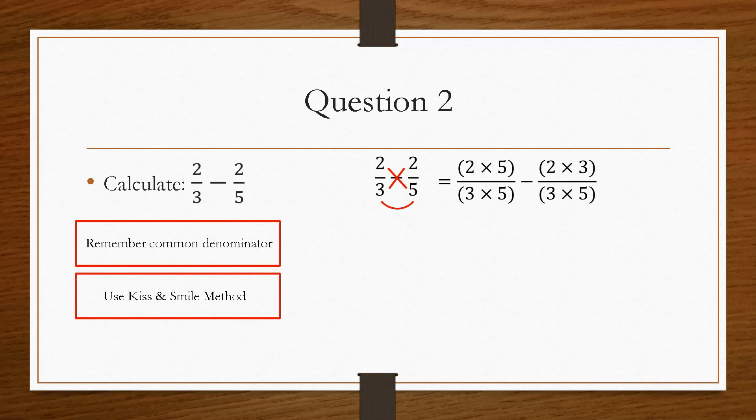So we get the intermediate calculations, 2 times 5 over 3 times 5, minus 2 times 3 over 3 times 5. So that'll give us 10 over 15 minus 6 over 15. Because we've got common denominator now, we just do the two top numbers take away each other, which will give us 4 over 15.